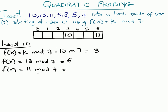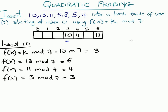For the next one we have 11, and 11 mod 7 is 4, so we keep 11 at position 4. For the next one we have 3: 3 mod 7 is 3. We're supposed to keep 3 at position 3, but that position is already occupied by 10, so this is where quadratic probing comes in.